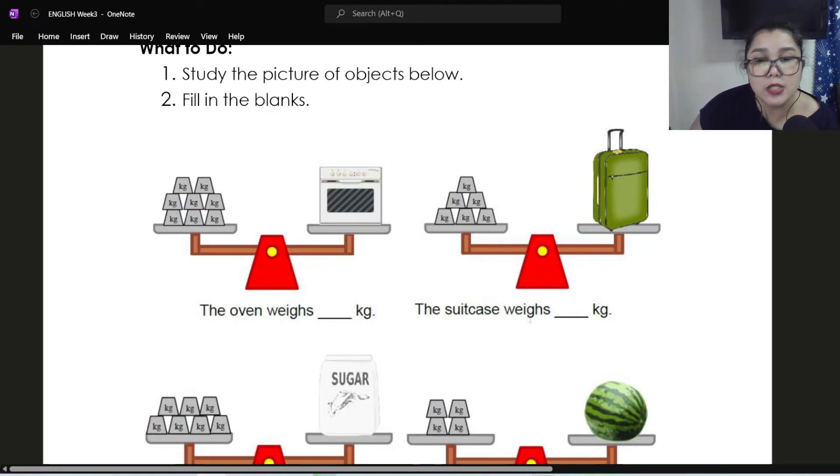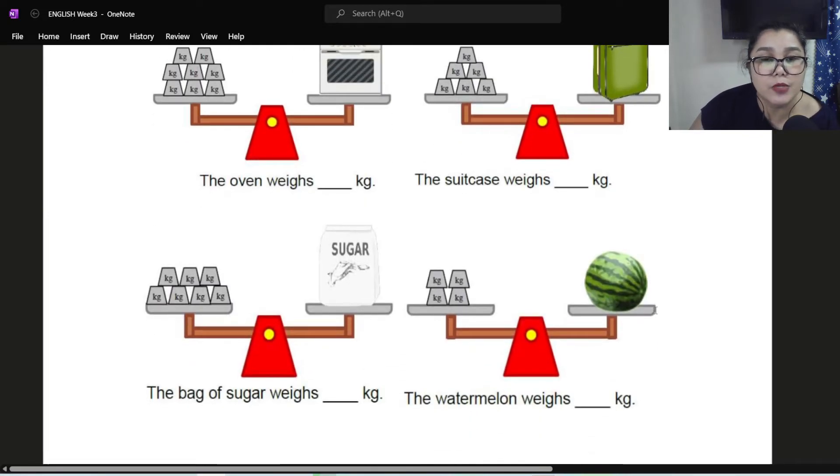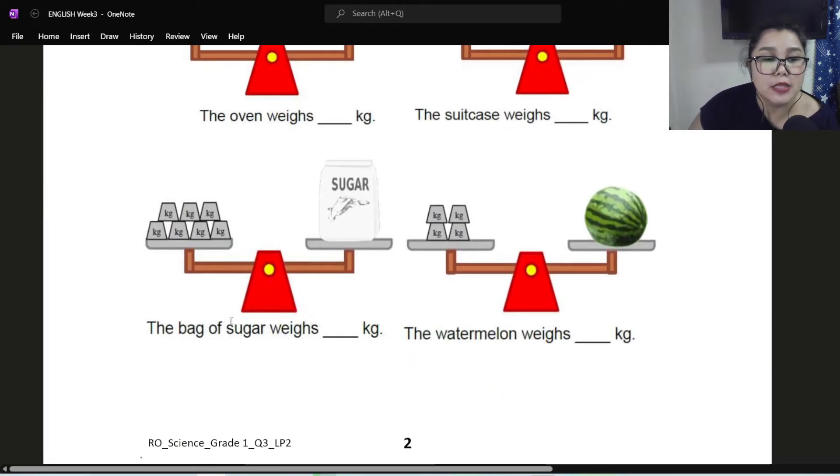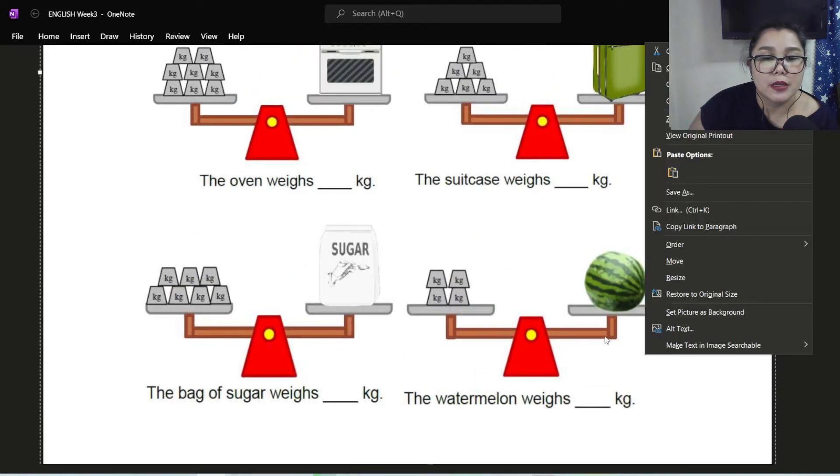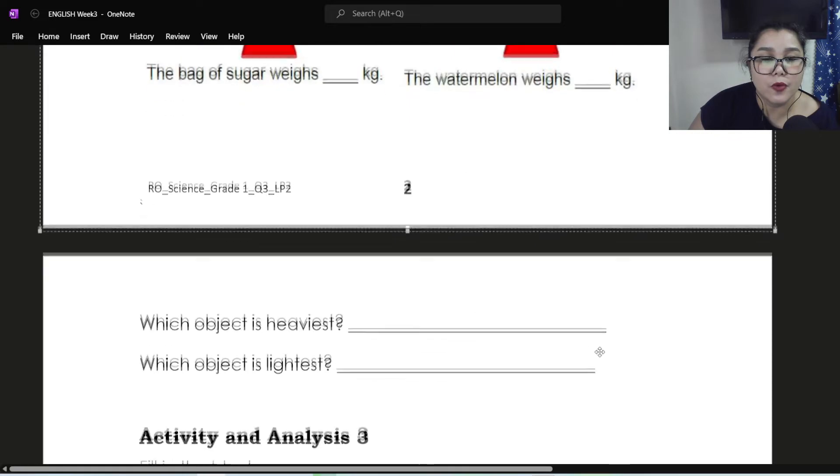Next is the suitcase. The suitcase weighs blank kilogram. Again, you need to count the one at the left to determine the number of kilograms. Next, a bag of sugar weighs blank kilogram. And then the watermelon weighs blank kilogram.